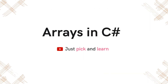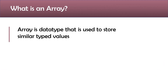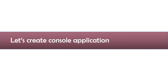Hi, this is Sahna. Today we are going to discuss arrays in C-sharp. Let's start with understanding what an array is. An array is a data type that is used to store similar type variables, and it's a reference type. Without further delay, let's create a console application so that we will have a better understanding of arrays.